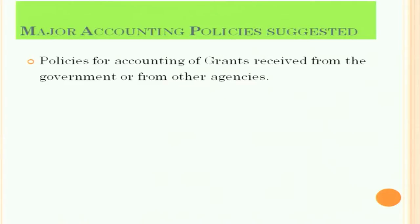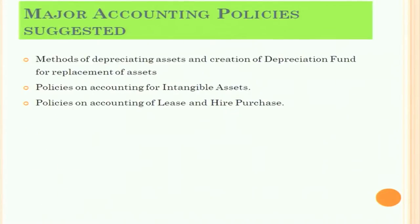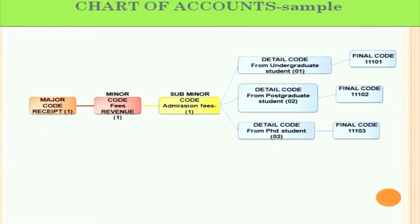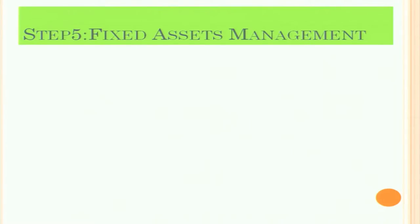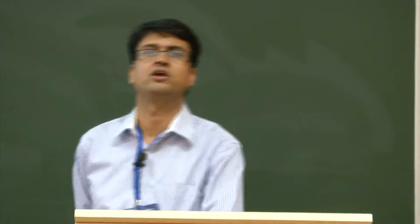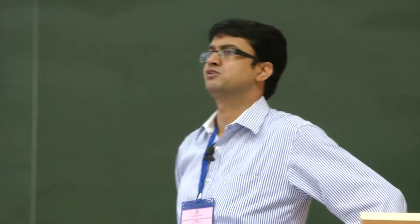Accounting policy is Step 3. Step 4 is the charts of accounts. Just these two starting points — accounting policies and charts of accounts — if right, after that it is only training. Common formats are given to you; nothing to be changed. You are all so expert in accounting — it is just a change of format.